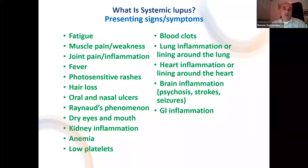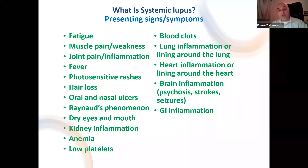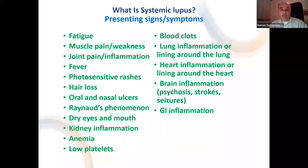Continuing with symptoms: dryness in the eyes and mouth. Kidneys can be affected — that's one of the more severe complications, where patients develop inflammation in the kidneys. Anemia, various types of anemia, low blood counts, low platelet counts. Patients can develop blood clots in the legs, blood clots in the lung — pulmonary embolisms. Heart and lung can be affected. One of the most severe complications is inflammation in the brain, which can manifest with psychosis, strokes, and seizures. Rarely, there can also be inflammation of the GI tract and intestines.